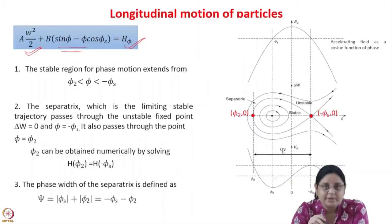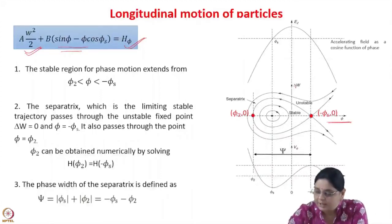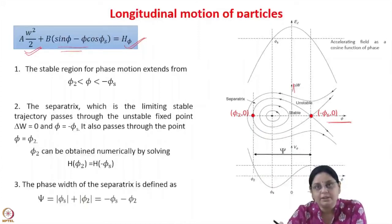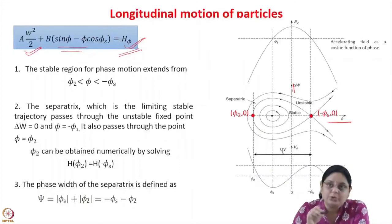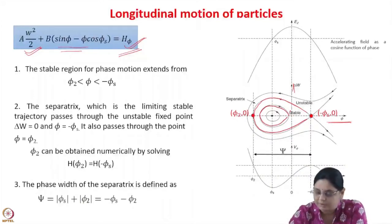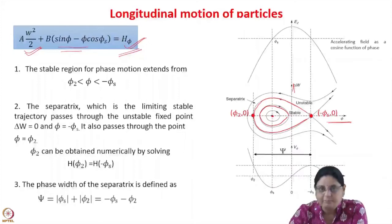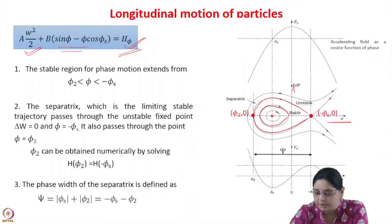This expression represents the trajectories of particles in the longitudinal phase space, which is represented by phi and delta_w. Here delta_w is the change in energy of the particle with respect to the synchronous particle. Depending on the values of the constant of motion, different particles will have different trajectories in the longitudinal phase space. For phi equal to phi_s, that is the synchronous particle, there is no motion, because it arrives at the gap at the right time and gets the right energy gain, so delta_w is 0 and phi always equals phi_s. Other particles will execute oscillations about the synchronous particle.